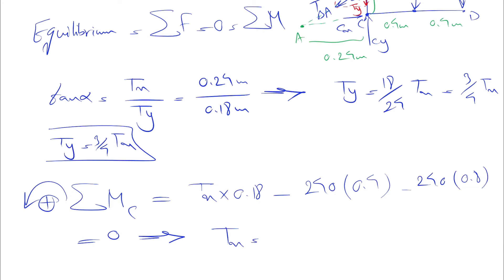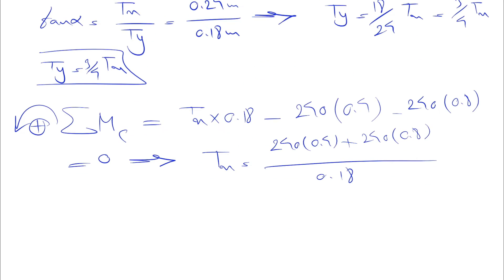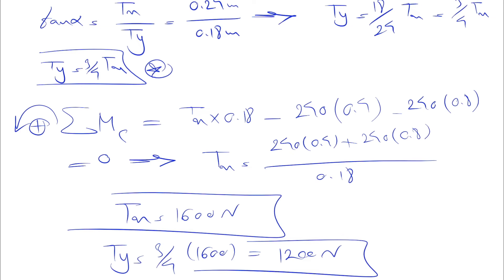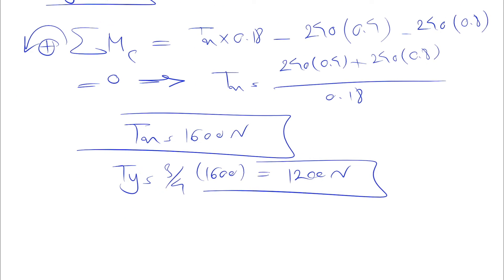From here the only unknown that we have is Tx, which will be 240 times 0.4 plus 240 times 0.8 divided by 0.18, and this would give us 1600 for Tx. So we've found the first unknown. Based on the equation that I'm showing with this star, we can find Ty. So Ty simply is three quarters of Tx, which is 1600, and from here we can find Ty equals 1200 newton.